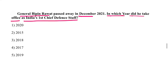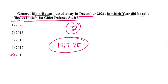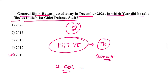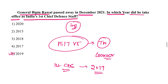General Bipin Rawat, India's first Chief of Defence Staff appointed in 2019, passed away in December. He died in a Mi-17 V5 helicopter crash in Coonoor, Tamil Nadu. Previously he served as Chief of the Indian Army.